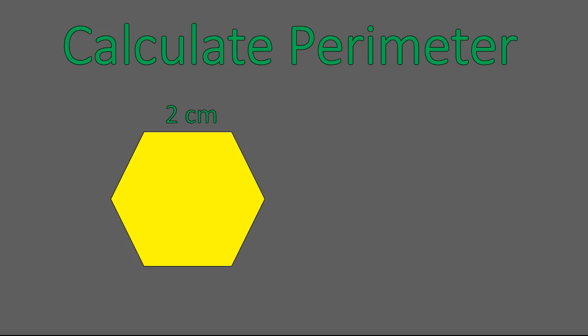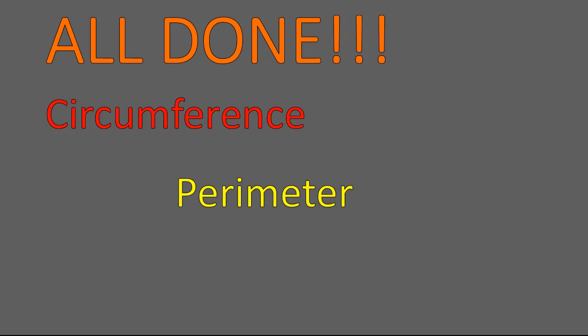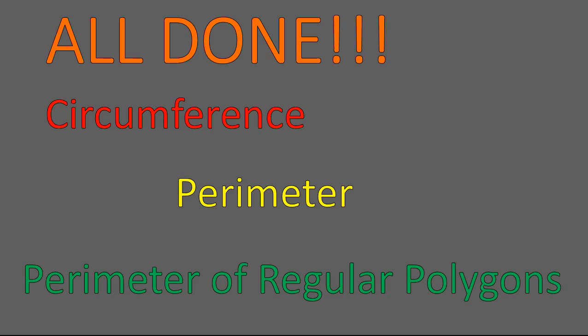Here is an equilateral regular hexagon for you. Go ahead and add up the sides or use multiplication to calculate the perimeter of this hexagon. Did you add 2 and 2 and 2 and 2 and 2 and 2 to get 12? Or did you multiply 2 times 6 and get 12? Either way, you should have gotten 12 — that's the perimeter of this figure, the distance around the outside. And that is all we are talking about today! We talked about circumference, perimeter, and the perimeter of regular polygons. I hope that lesson was helpful for you. Have a wonderful day.